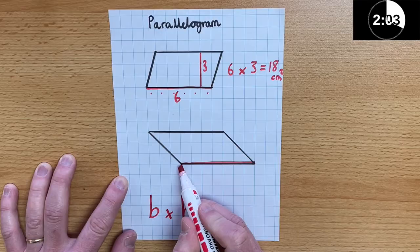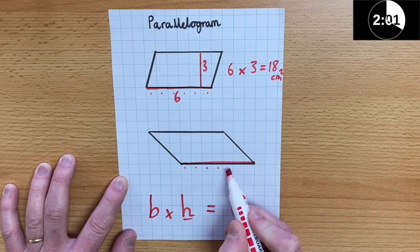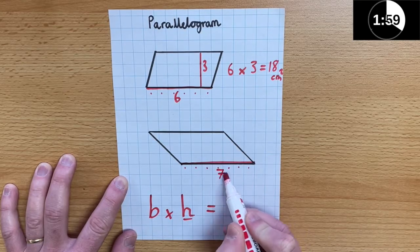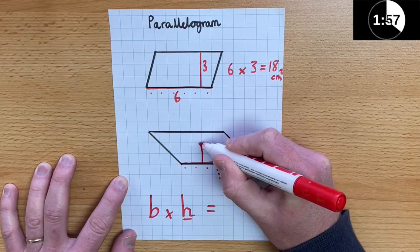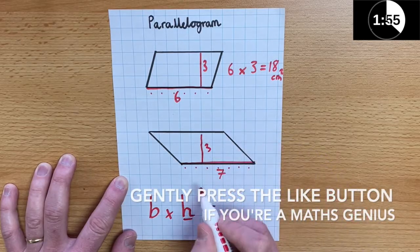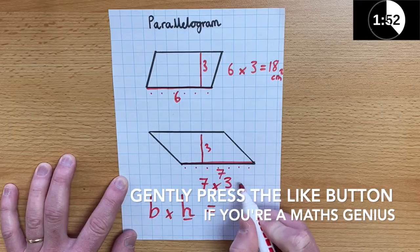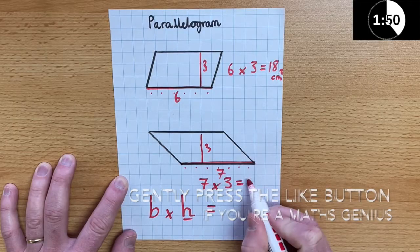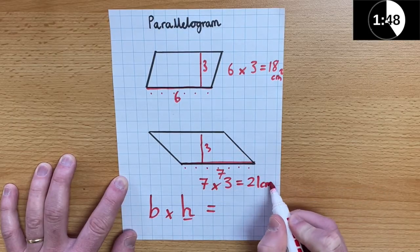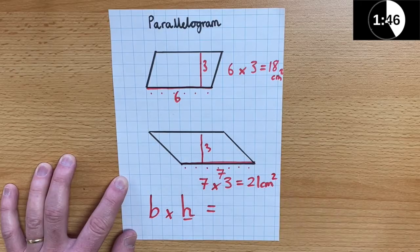So, the base of this one is 1, 2, 3, 4, 5, 6, 7. And the height is 1, 2, 3. So, I need to do 7 multiplied by 3, which is 21 centimeters squared.